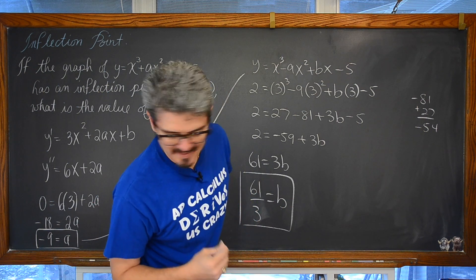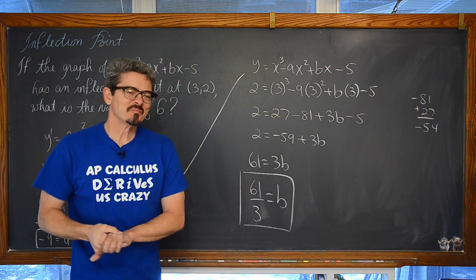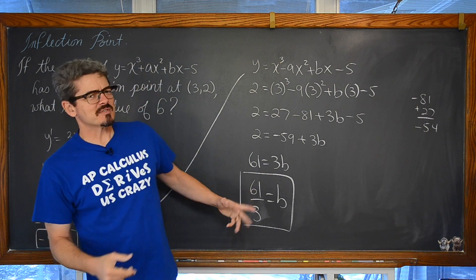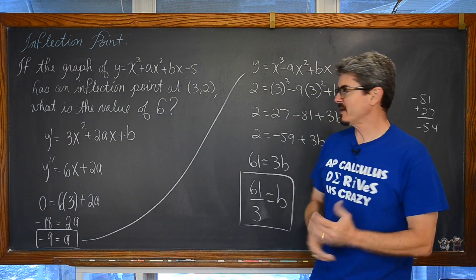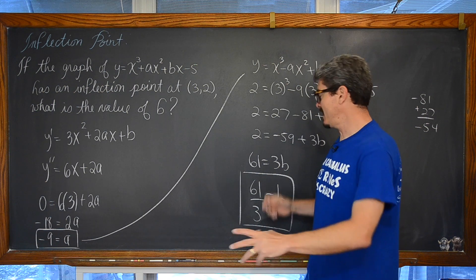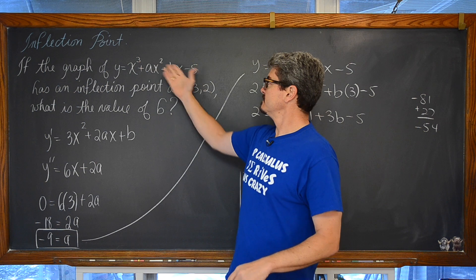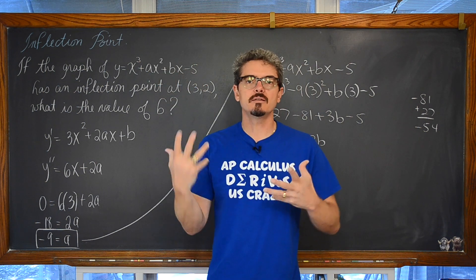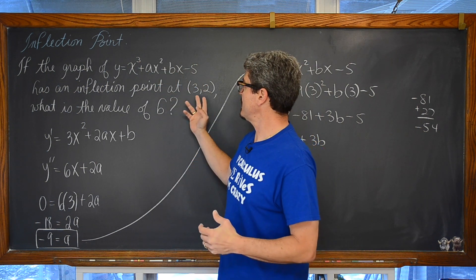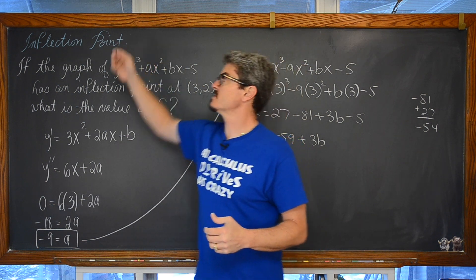And this is what happens when you make up your own problems. Sometimes you get some answers that are a little bit ugly. But that is the correct answer. And that is the end of this problem. Tying together a little bit of unknowns with the idea that we need to take that initial value and some unknowns and find the inflection point.